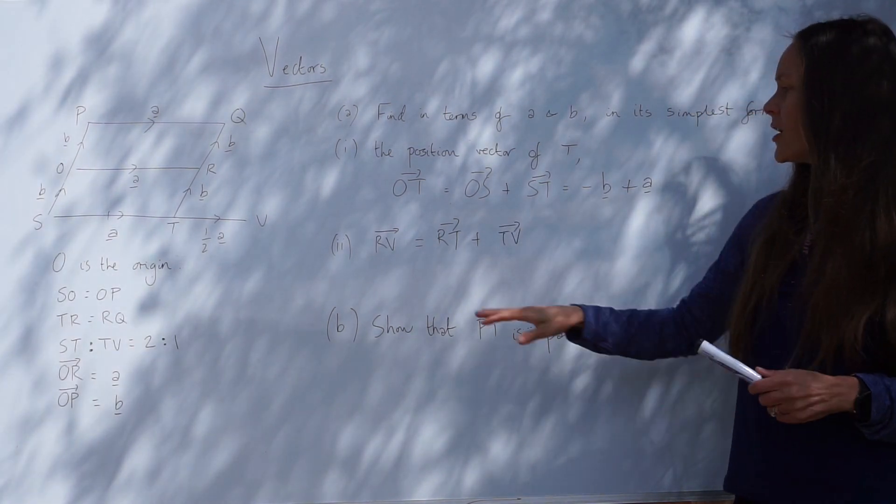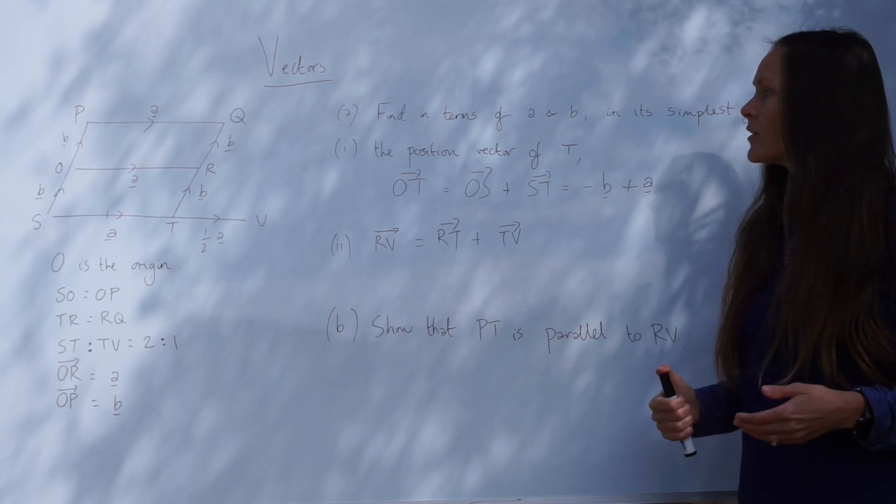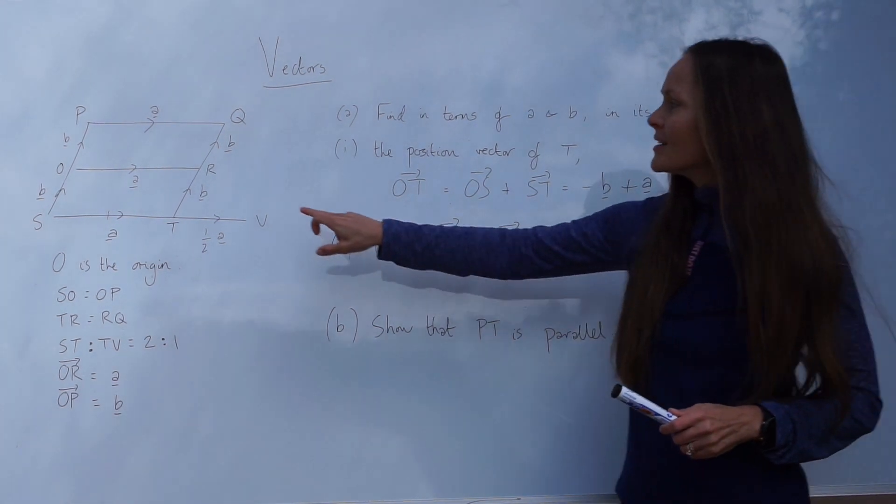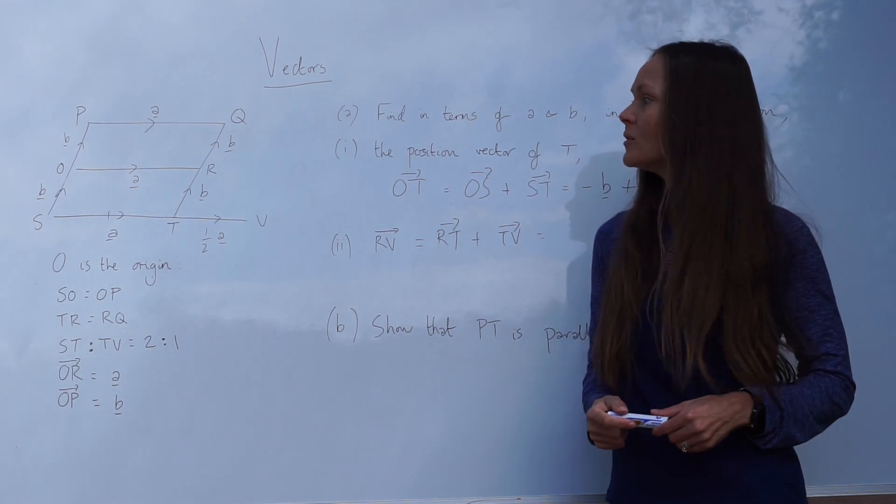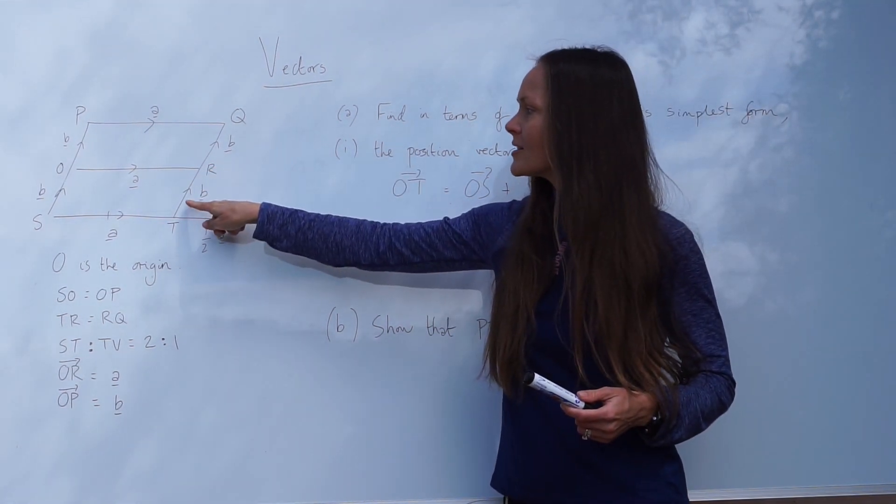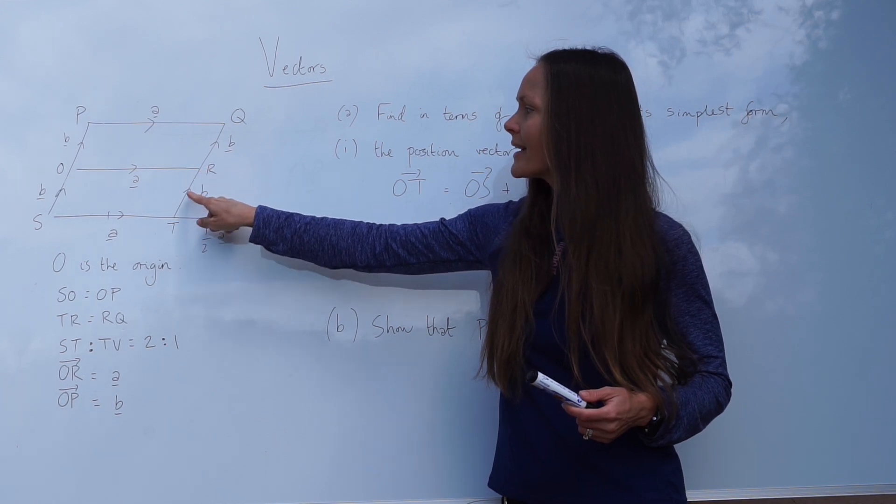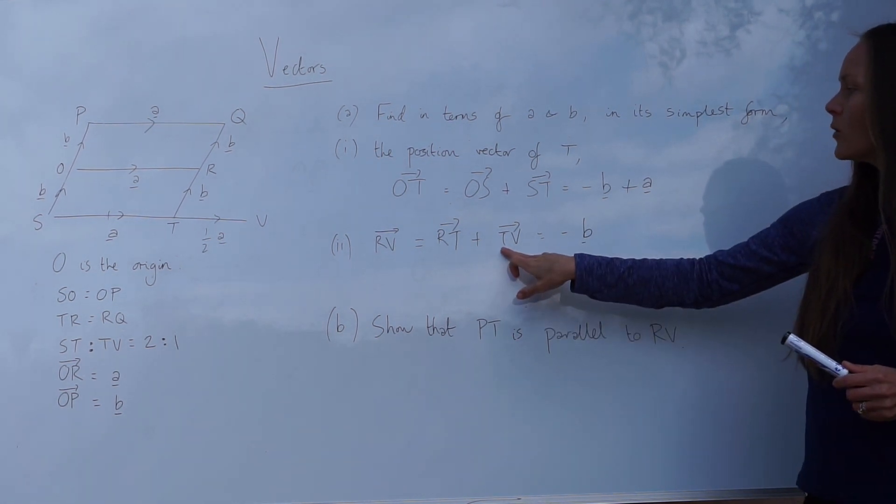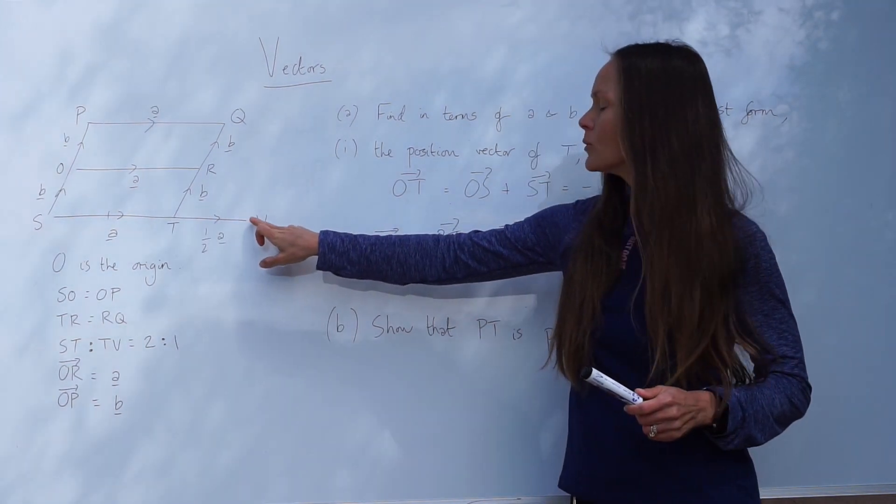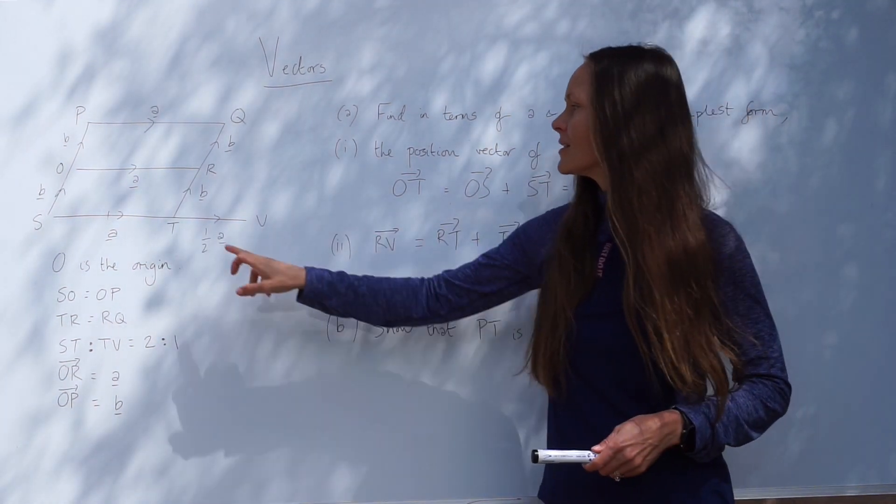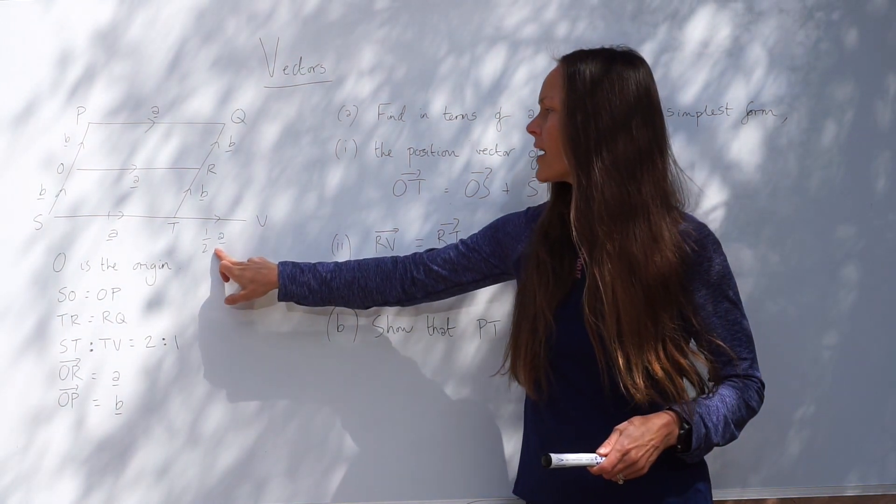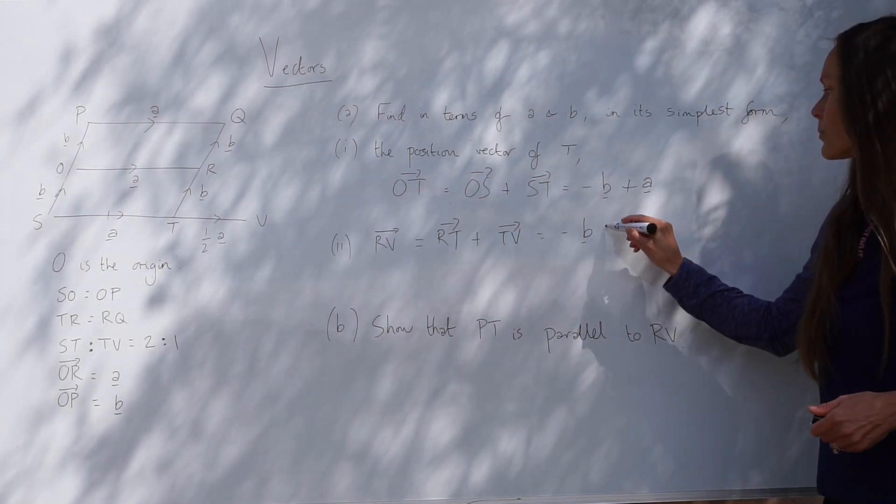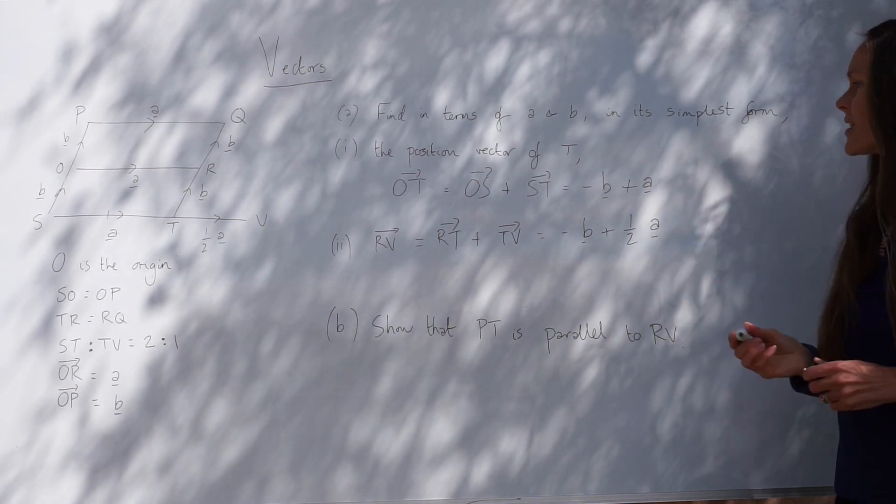So remember, you don't have to write down where I state the direction, but when the questions get a little bit more difficult, this becomes very useful. So RT, we can see already, this side here is labelled with vector B. However, we're travelling against the direction of the arrow. So this is negative B. Then, if we travel along TV, this is also labelled on the diagram. Remember, we labelled this at the beginning of the lesson. TV is equal to a half A. And we don't need to change the sign, because we're travelling in the correct direction with the arrow. So it's plus a half A. So that's the answer to part two.